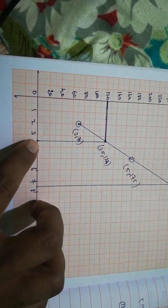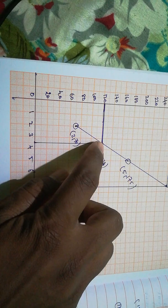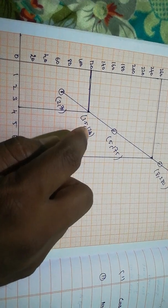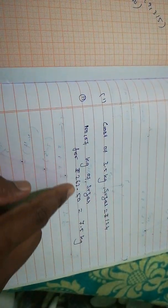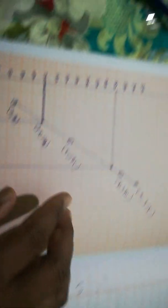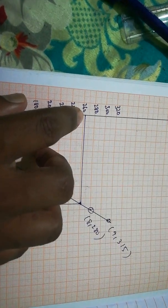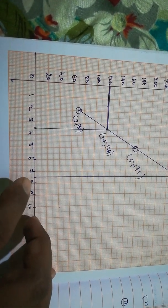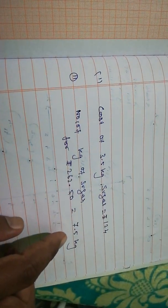From the graph, find the cost of 3.5 kg: draw a vertical line at x=3.5, then a horizontal line across — it meets the y-axis at approximately 122.5. For the second question, 262.50 rupees: find 262.5 on the y-axis, draw across to the line and down — that gives 7.5 kg. So the answers are approximately 122.50 rupees and 7.5 kg.